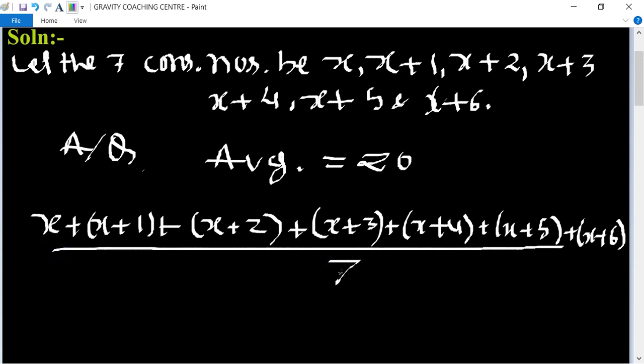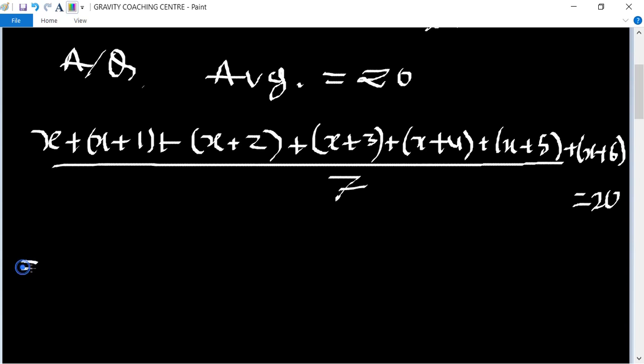7x + 21 upon 7 equals 20. So after simplifying, 7x + 21 equals 140.